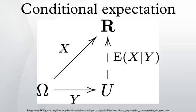Pulling out known factors: if Z is G-measurable, then E[XZ|G] = Z·E[X|G]. Law of total expectation. Tower property: for sub-sigma algebras G₁ ⊆ G₂, we have E[E[X|G₂]|G₁] = E[X|G₁]. A special case is when Z is a G-measurable random variable; then E[E[X|G]·Z] = E[X·Z]. Doob martingale property: using the tower property with successive sigma algebras and also the stability property gives the martingale result. Linearity: E[aX + bY|G] = a·E[X|G] + b·E[Y|G] for constants a and b. Positivity: if X ≥ 0, then E[X|G] ≥ 0. Monotonicity: if X ≤ Y, then E[X|G] ≤ E[Y|G].